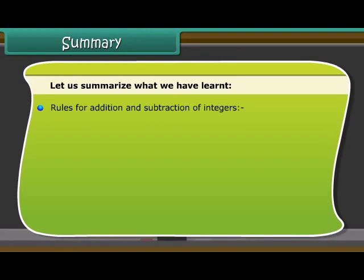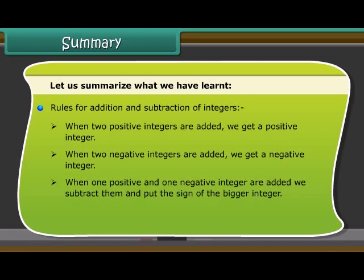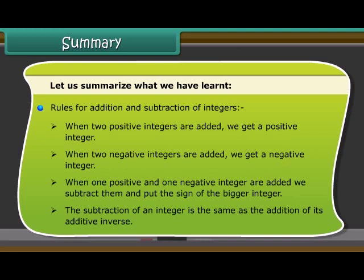Rules for addition and subtraction of integers: 1. When two positive integers are added, we get a positive integer. When two negative integers are added, we get a negative integer. When one positive and one negative integer are added, we subtract them and put the sign of the bigger integer. The subtraction of an integer is the same as the addition of its additive inverse.